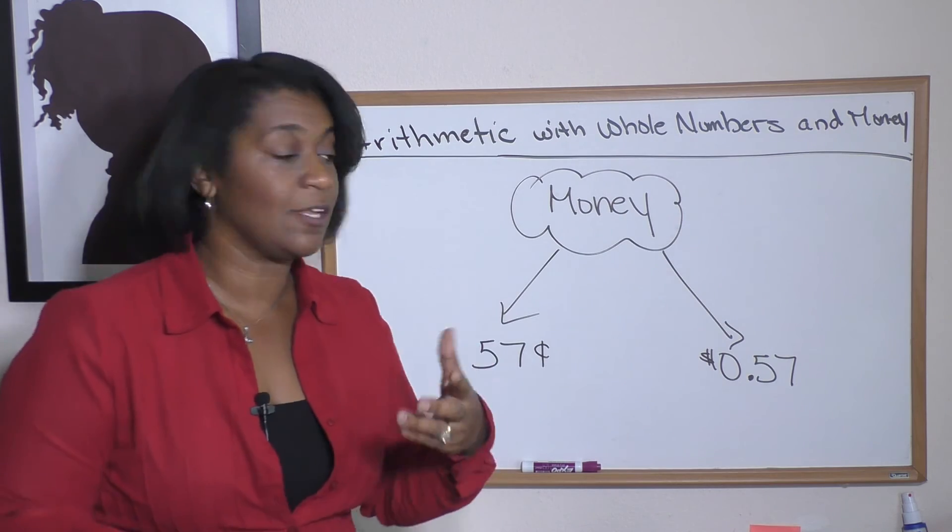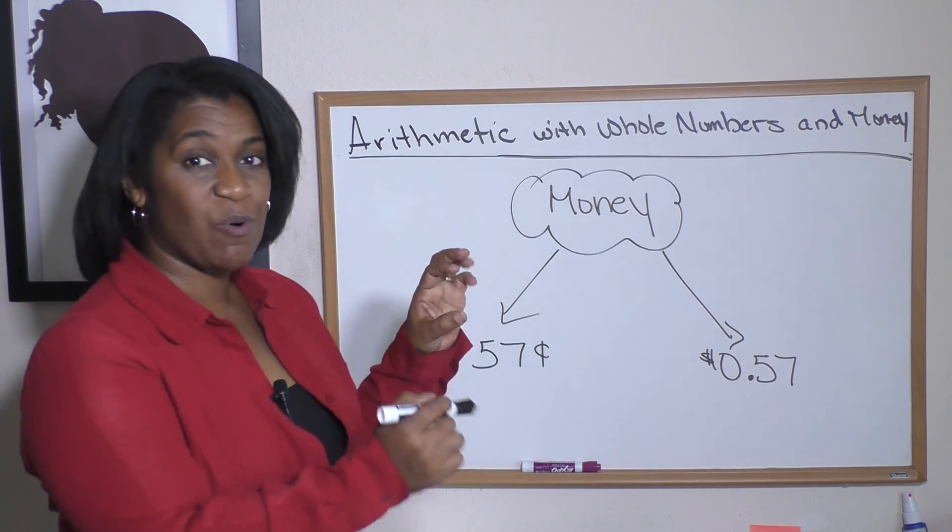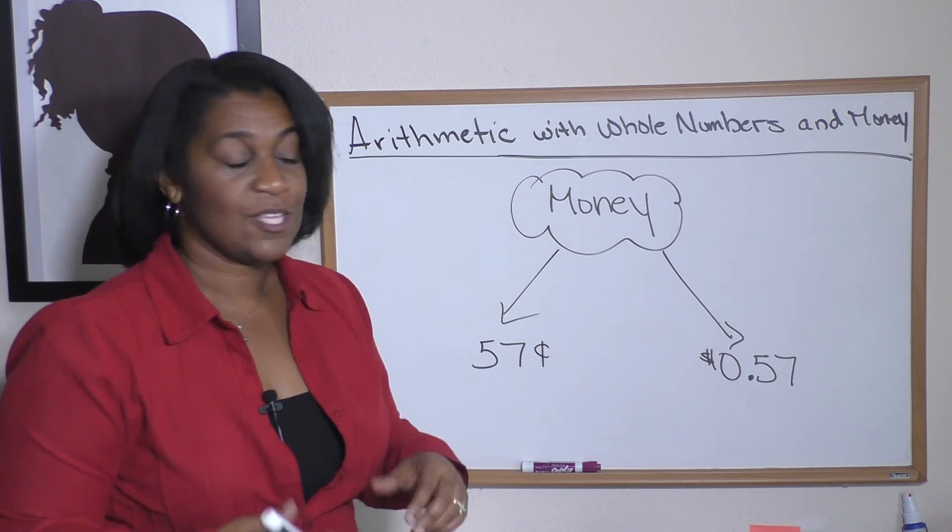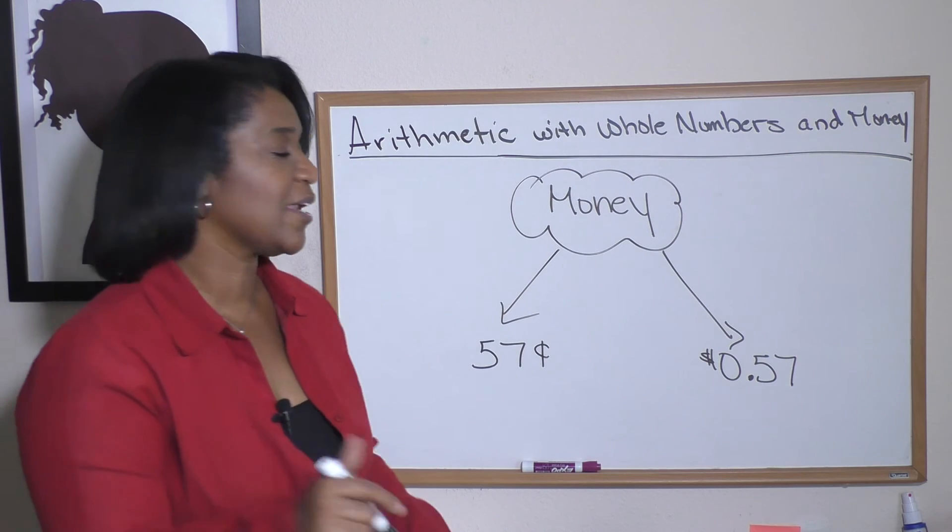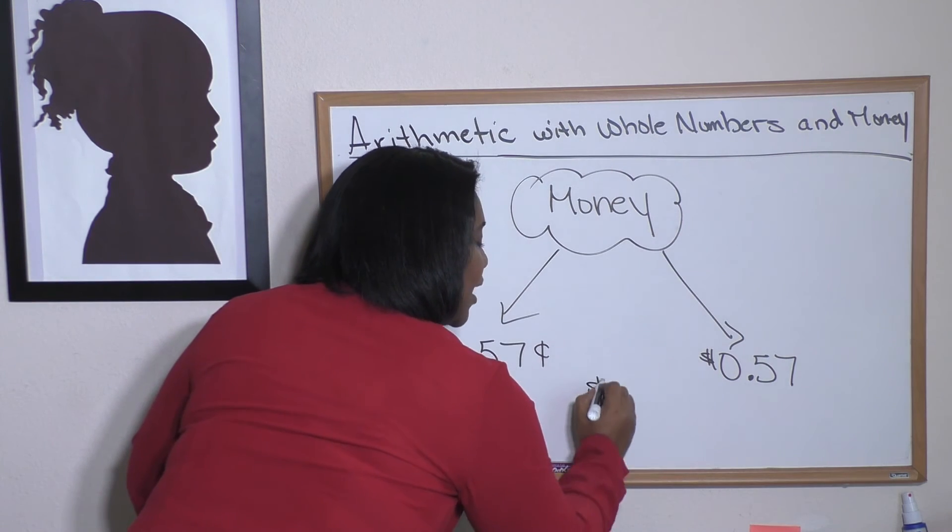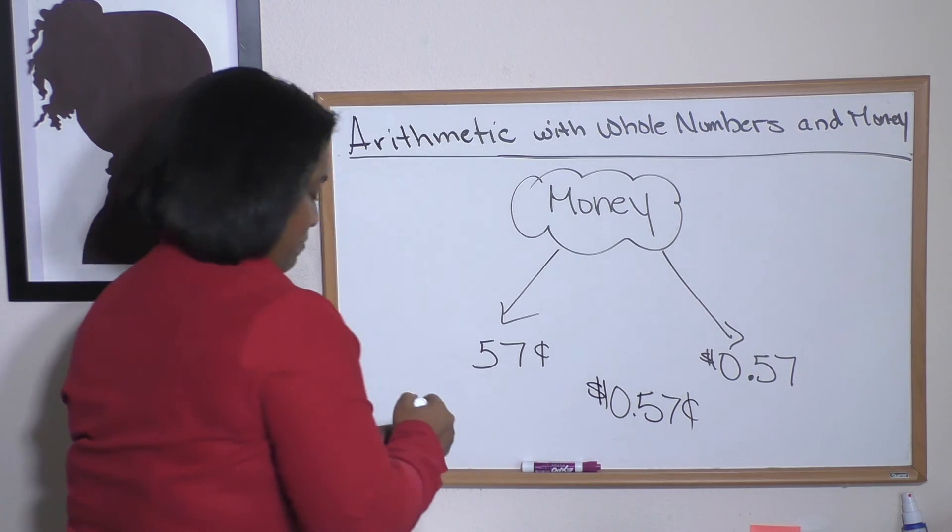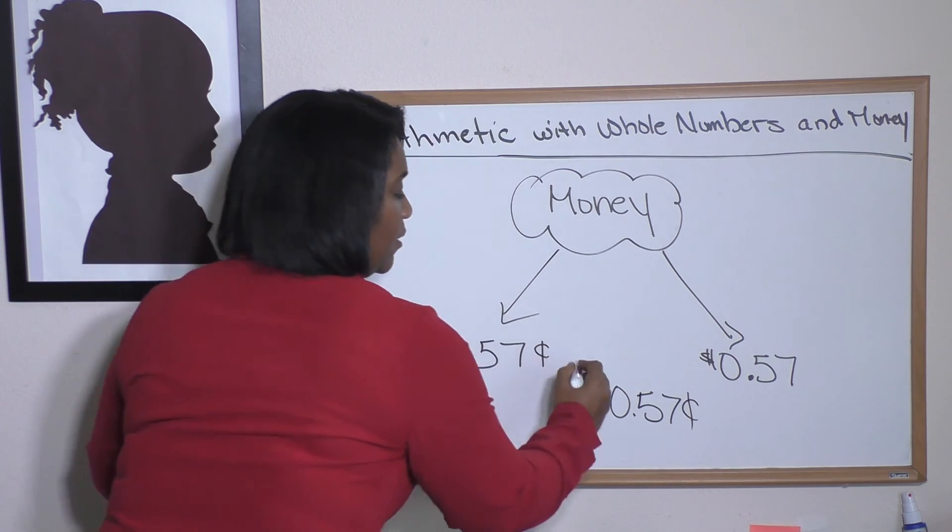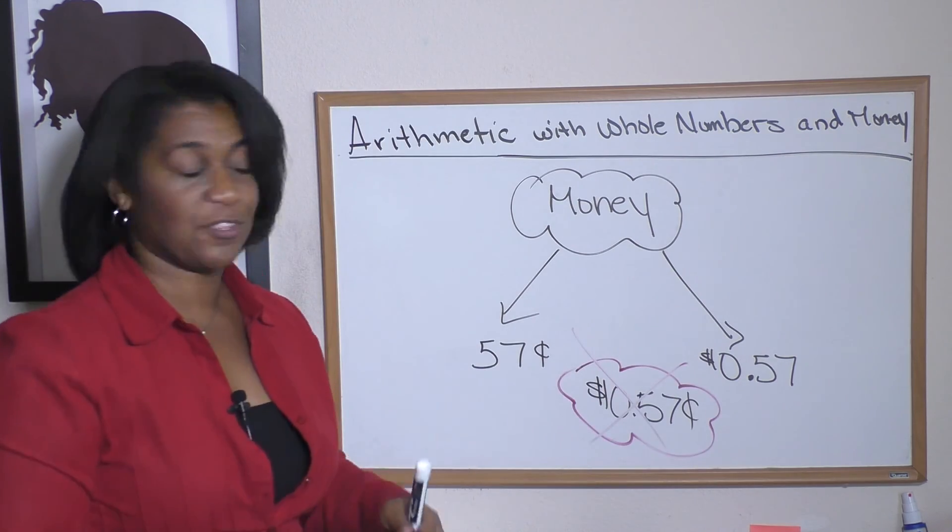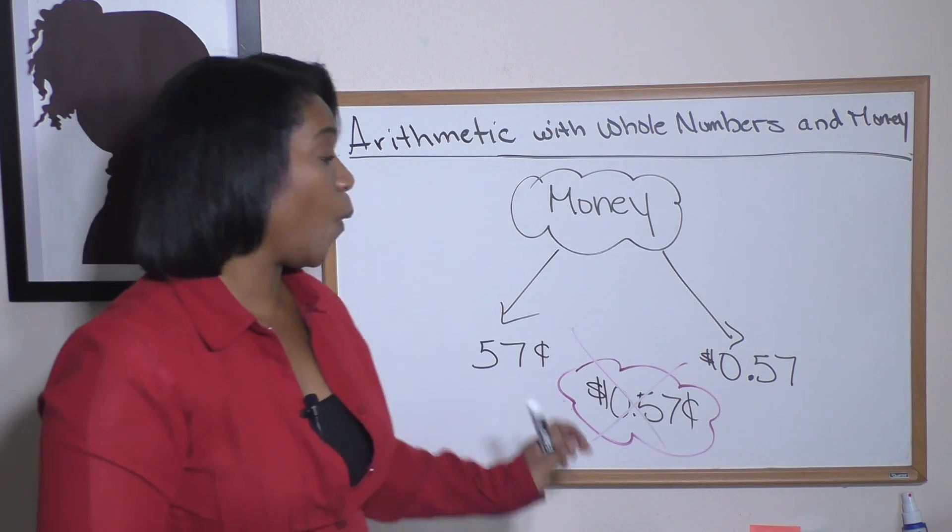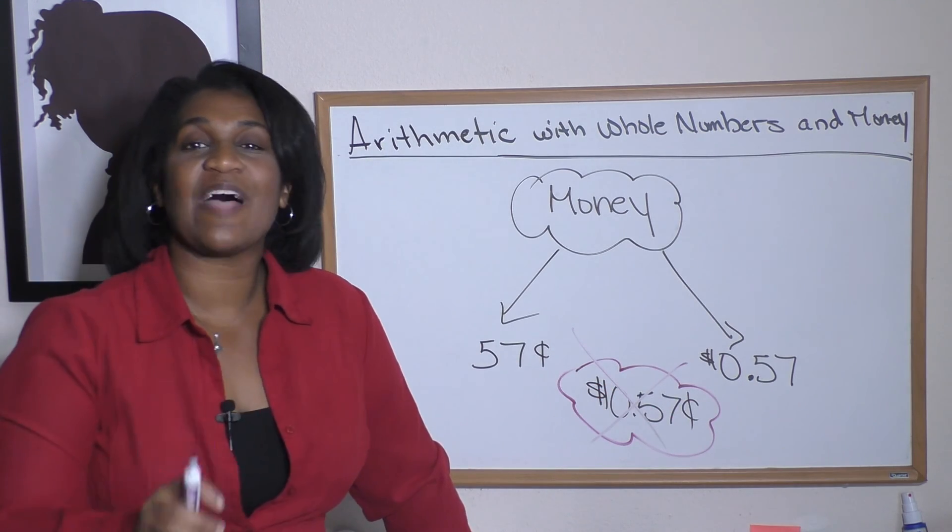So either way is acceptable. Let me show you one way that is not acceptable: sometimes people want to do a dollar sign and then they also want to throw the cents in. This one is not acceptable. You can't do both; you've got to pick one—the cents or the dollars. Easy, right? Now that you have some basic definitions, I think you are ready to learn some more terms related to the four operations of arithmetic.